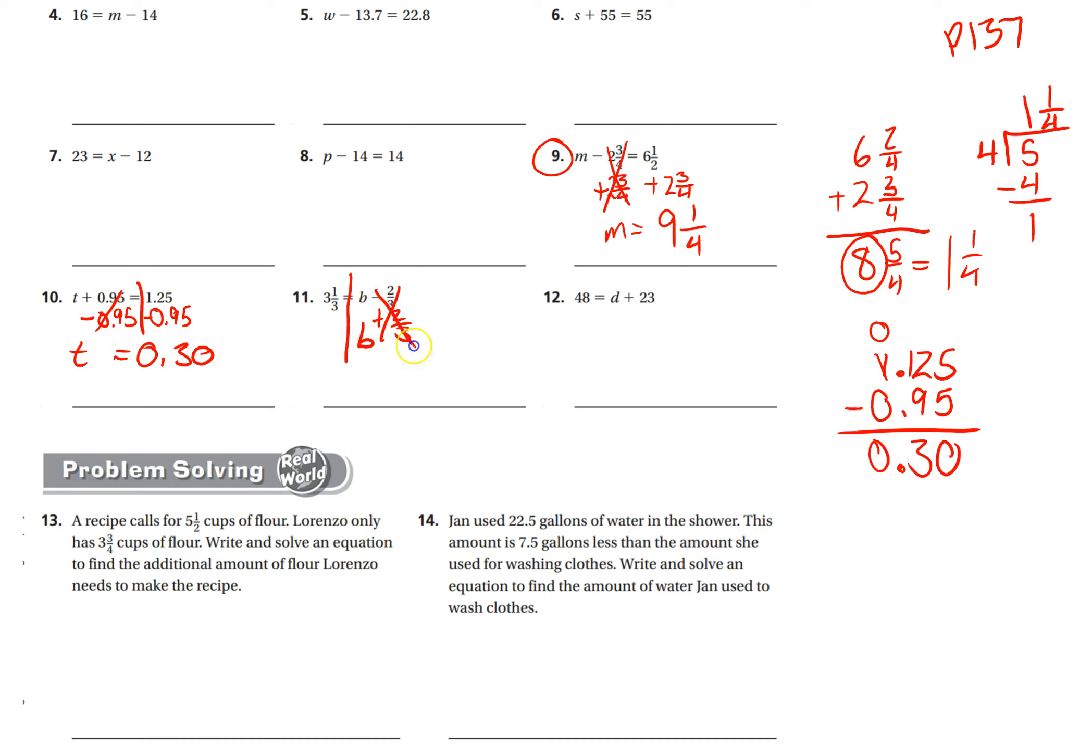I want to add two-thirds. That's going to leave me with just b on this side of the equal sign. Whatever I do to one side I have to do to the other, so I got to add two-thirds over here. I'm going to show my work on my scratch paper over here. So three and one-third plus two-thirds. One-third plus two-thirds is three-thirds, and then three plus nothing is just three.